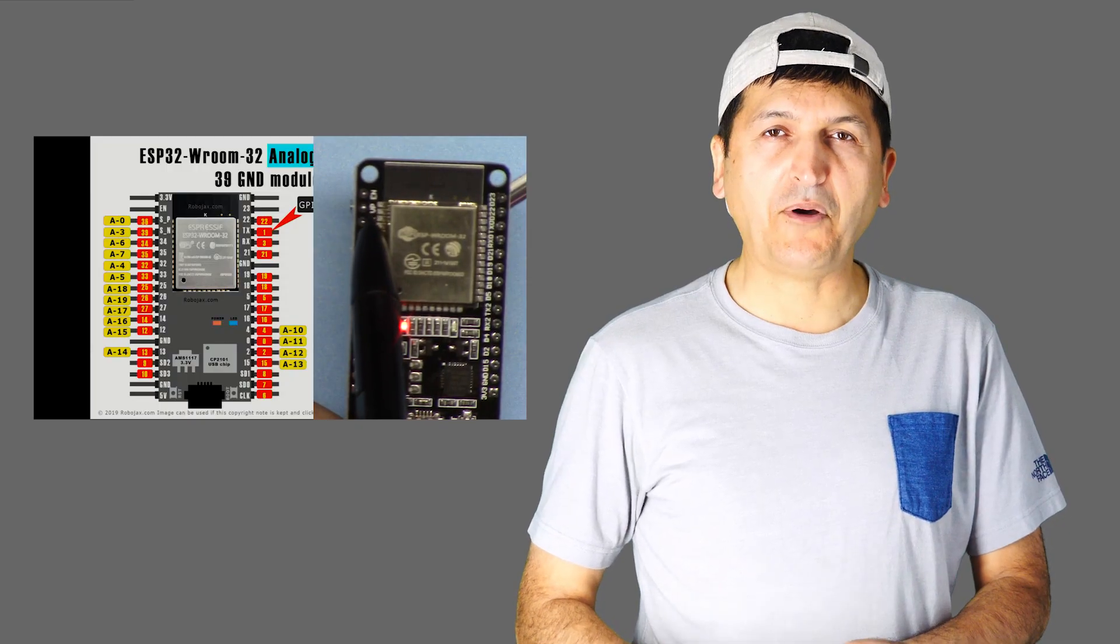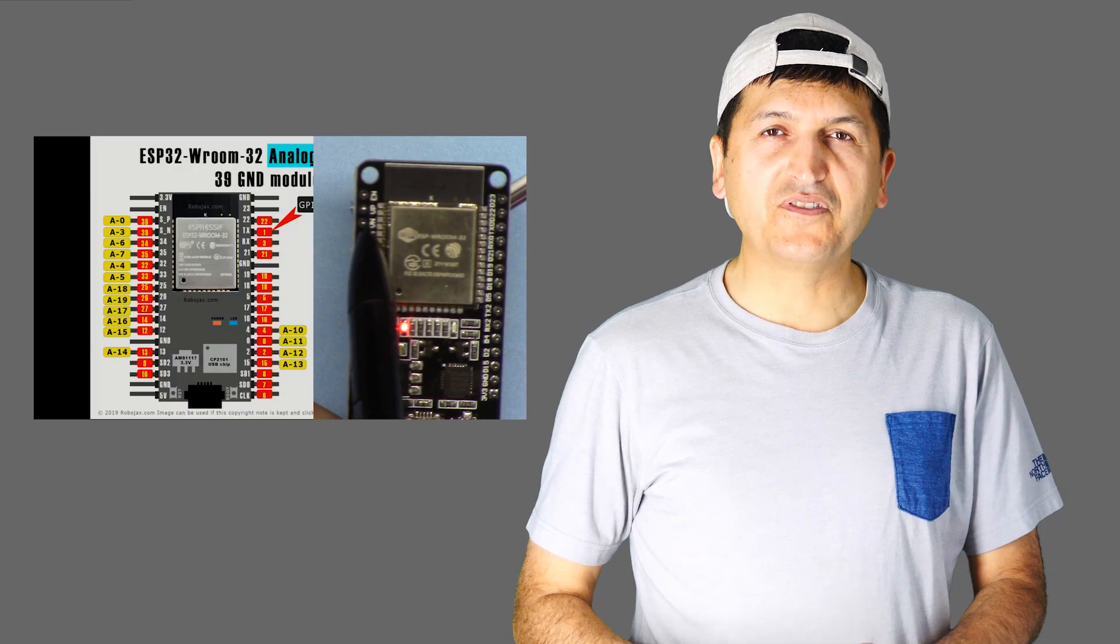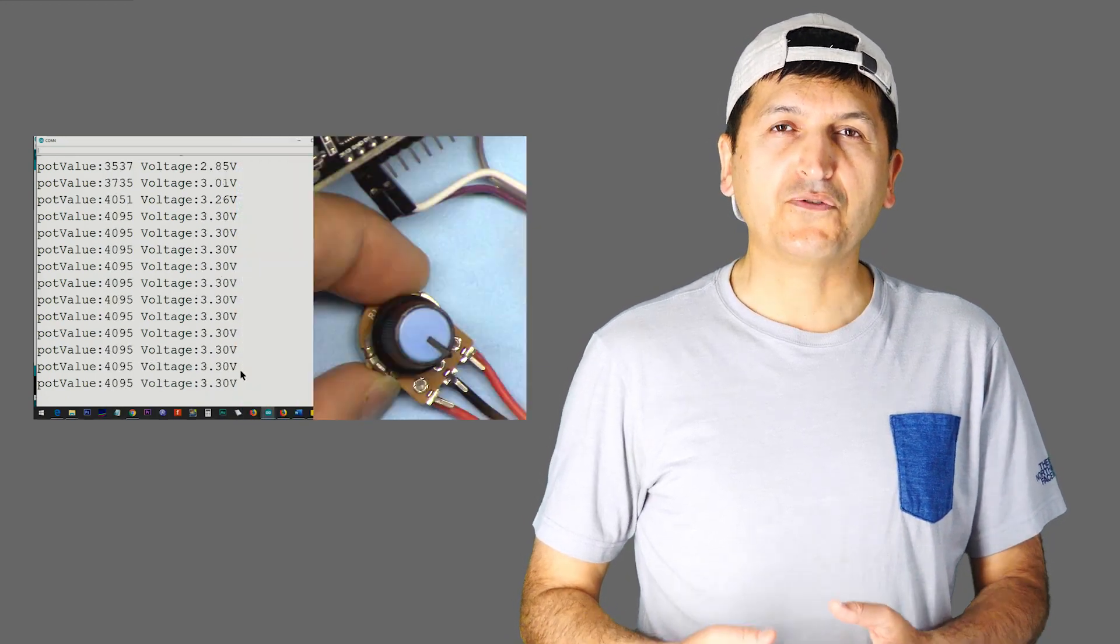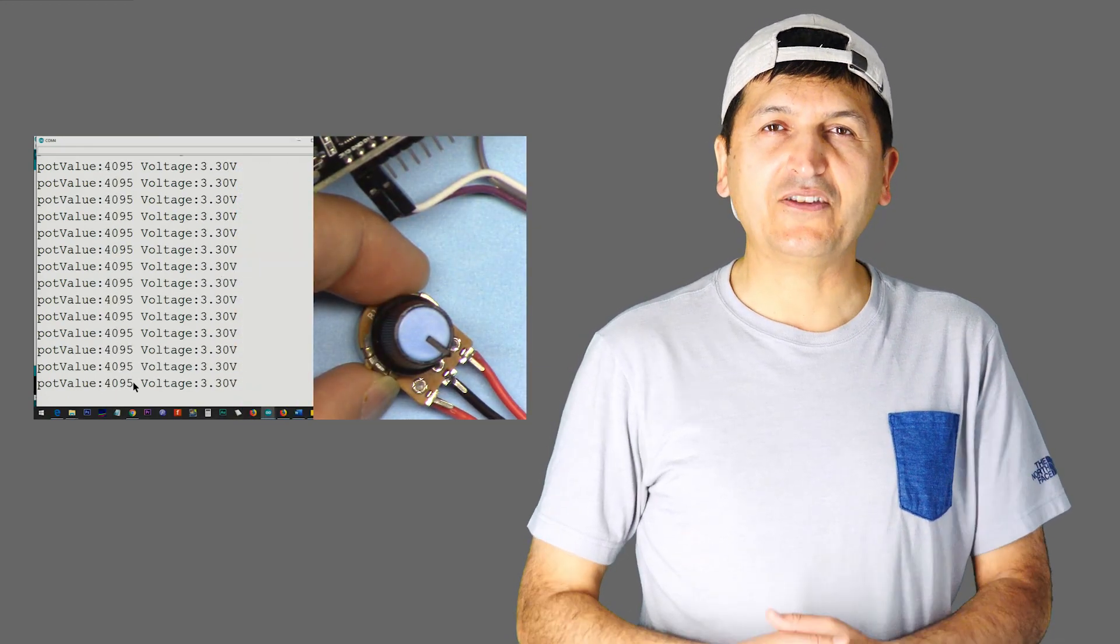We're going to learn about the number of pins, how to use them in code, and I will give you an example using a potentiometer to read the voltage and display it on the serial monitor.